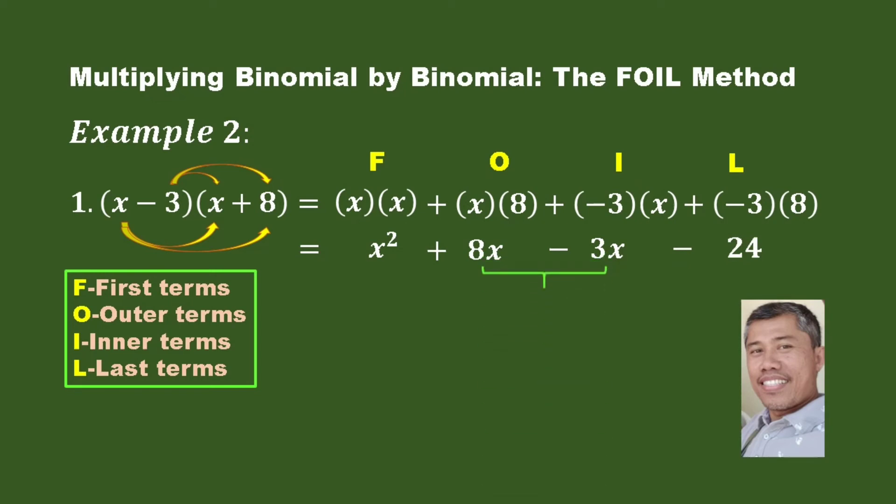In the expression below, there are two terms that are similar and we have to combine them. So our final answer is x squared positive 5x negative 24.